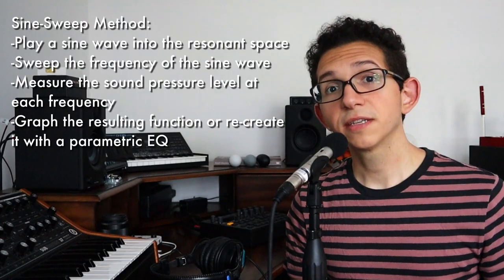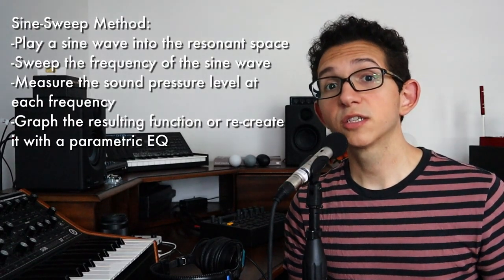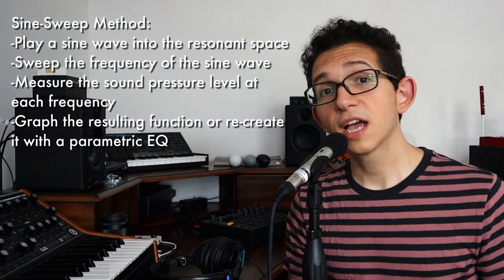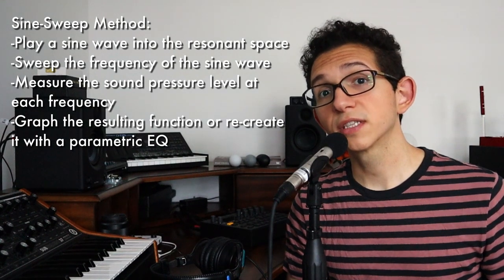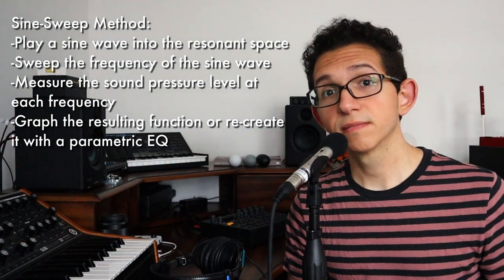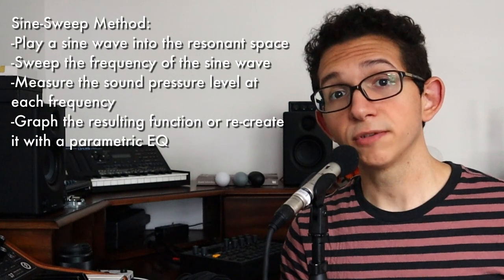This concept doesn't only apply to rooms. Acoustic instruments — percussion, strings, brass, wind — all have their own spectral envelopes that affect their sound. To calculate these envelopes, you can use the sine sweep method: play a simple sine wave into the resonant body and sweep its frequency, measure the resulting sound pressure levels, and graph the amplitudes in relation to frequency. Once you have the spectral envelope measured, you can recreate it with a parametric EQ and use it to model the resonant properties of the space.